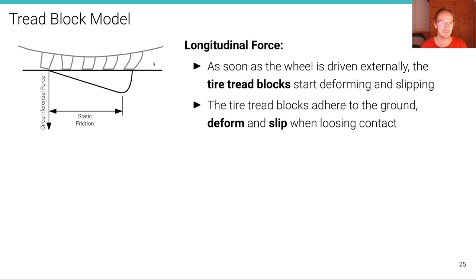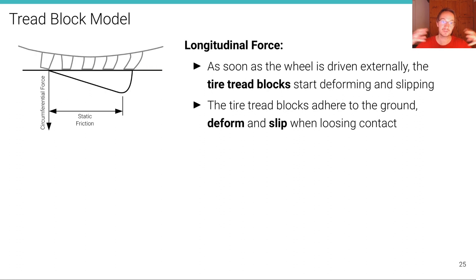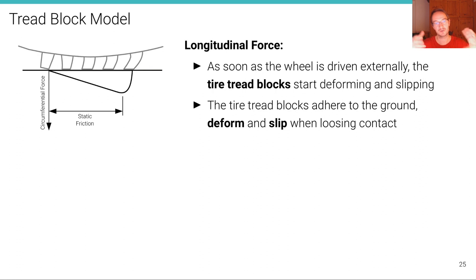This is already the reason for slip. The tread blocks deform in order to transport the force and apply it to the ground. The speed of the wheel in this area is not the same as it would be in perfect contact with the ground, because the force is transported through these deforming tread blocks. The tire tread blocks adhere to the ground, deform, and then slip when losing contact. So there is slip happening because they deform, and the speed of the wheel and the ground are not the same.